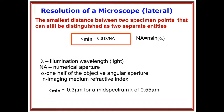When we talk about the resolution of a microscope, resolution means the smallest distance between two specimen points that can still be distinguished as two separate entities. The formula is: D = 0.61 λ divided by numerical aperture. N is the numerical aperture, which equals N sin α. Lambda (λ) is the illumination wavelength of light.